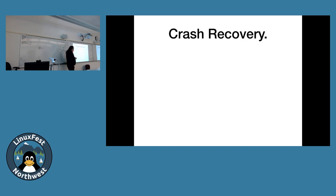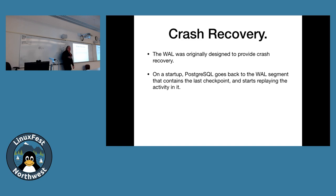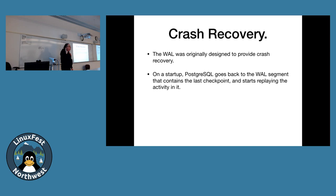The reason WAL exists in the first place is crash recovery. At any one moment there is data that's been modified but hasn't been flushed to disk yet, sitting in Postgres's shared buffers. If the server crashes at that moment, absent the write-ahead log, that data would be gone forever. Because there's no real synchronous algorithm for how this stuff is written, you may end up with a corrupt, inconsistent database. So Postgres checkpoints periodically — a point at which everything in shared buffers has been pushed to disk and the database is declared fully consistent.